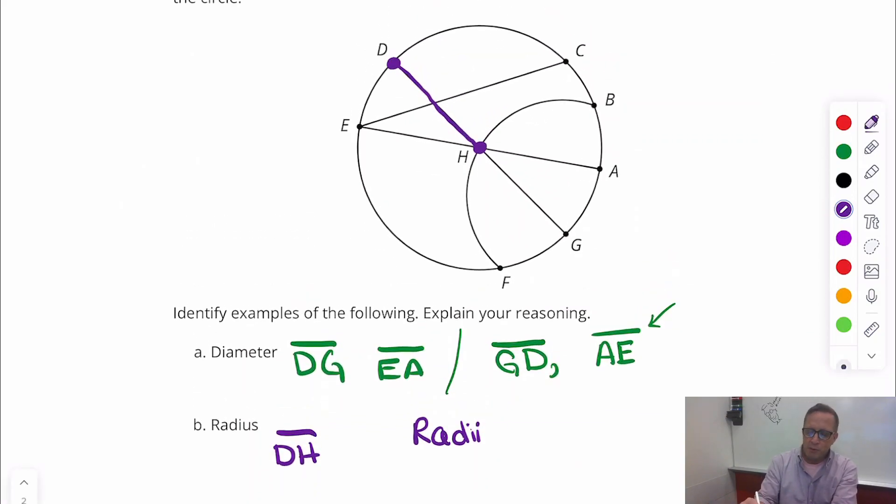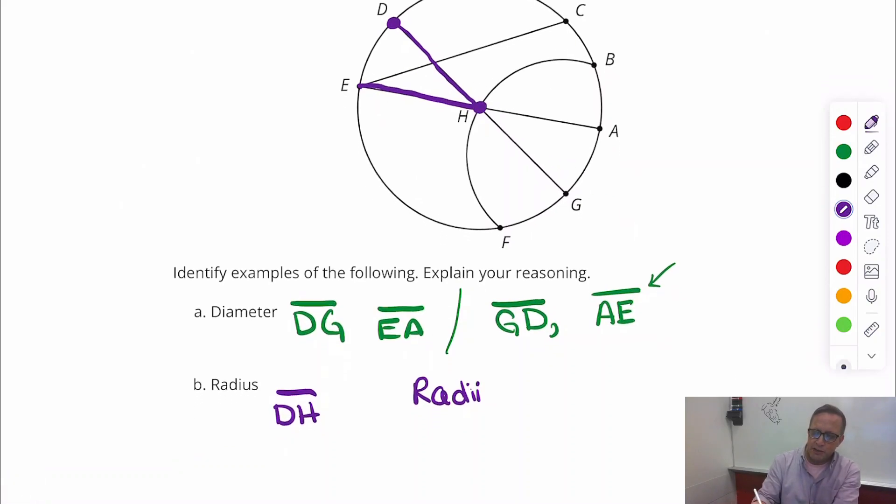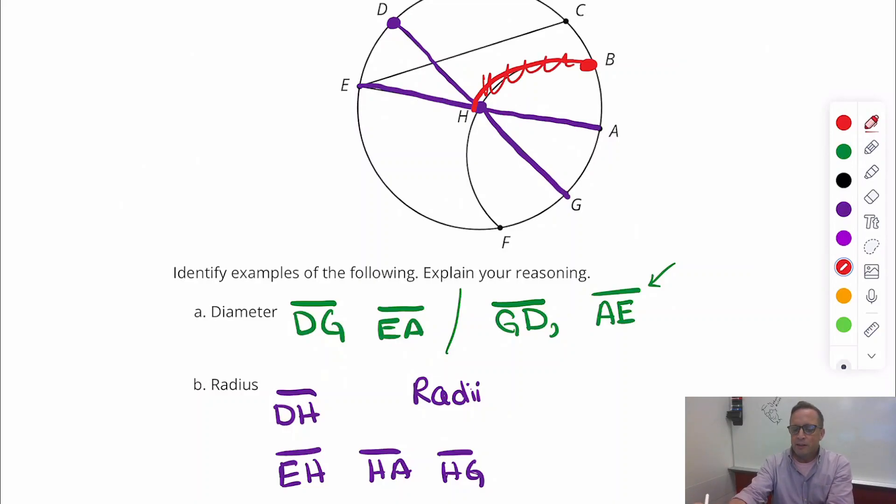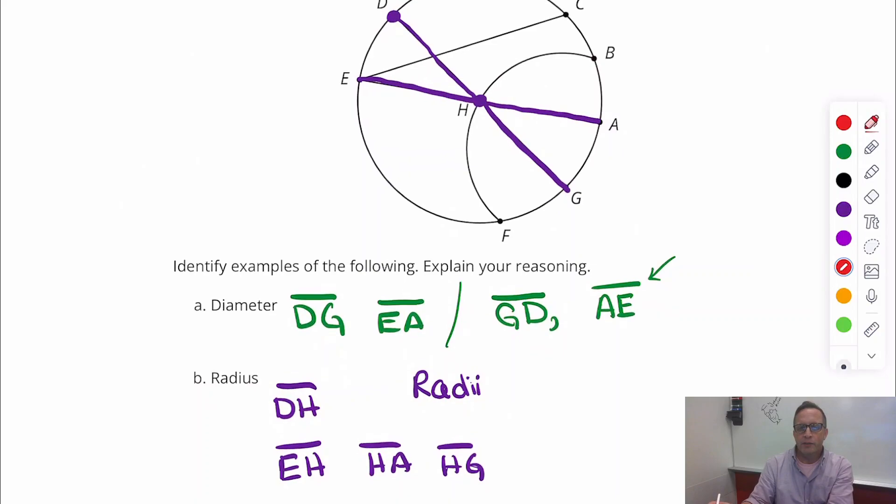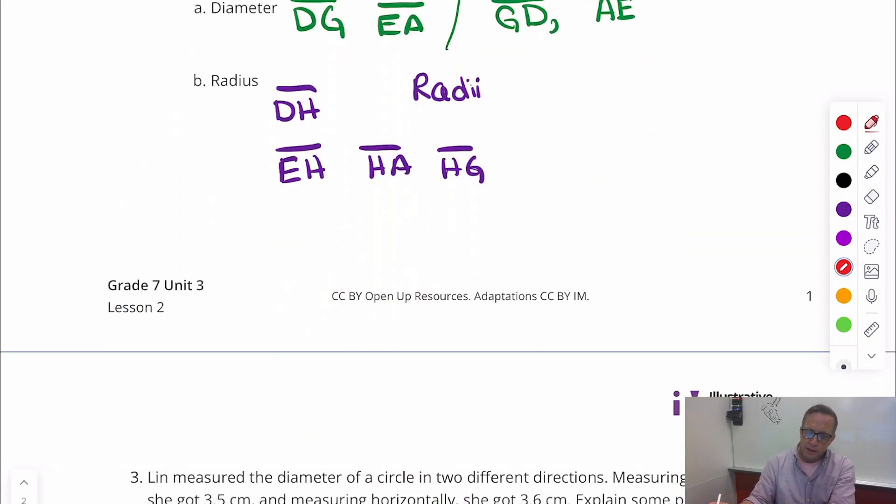So you got DH, that's one of them. I would call EH is a radius, segment EH or HE. I would call HA a radius. HG is another radius. And I think I covered them all. And you might notice that this right here goes to the middle, but that's not a radius because it's not linear. It's got to be a segment. It's got to be perfectly straight. So you can call that an arc, but it's definitely not a radius.